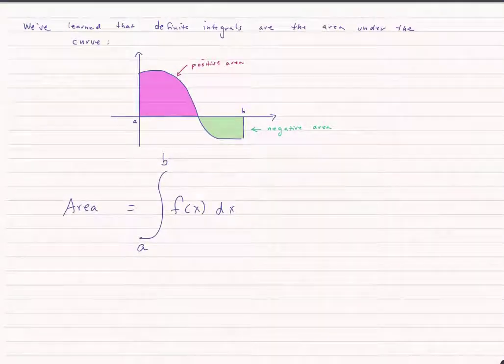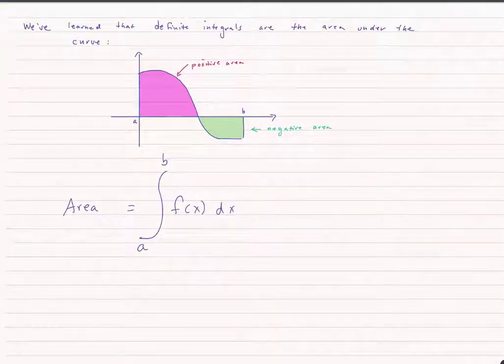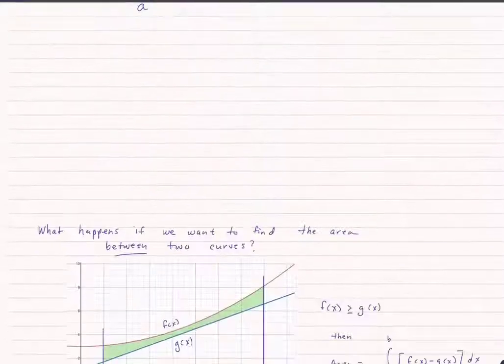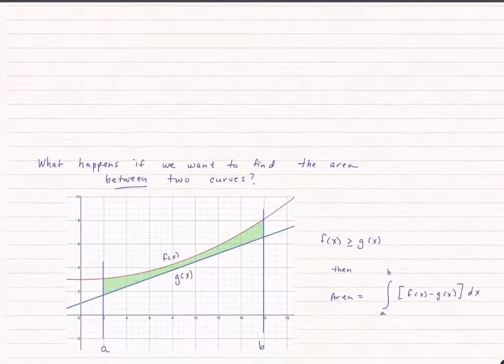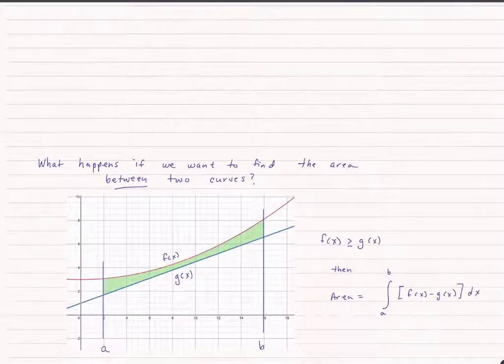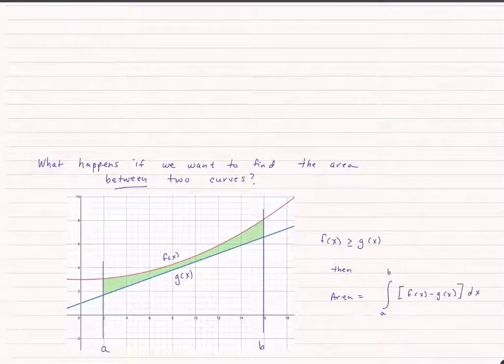So what happens if we have two curves and we wanted to find out the area between two different curves? Something like this, where we have f of x on the top, g of x below it, and we want to know the area between the curves between two points a and b.